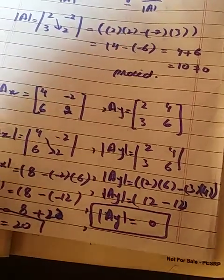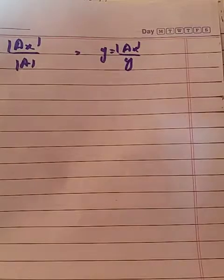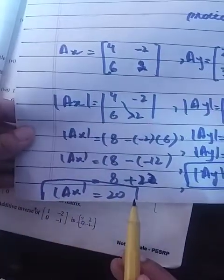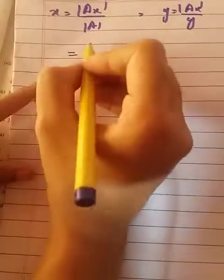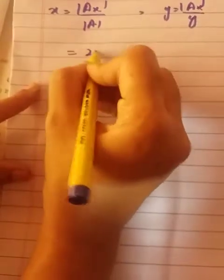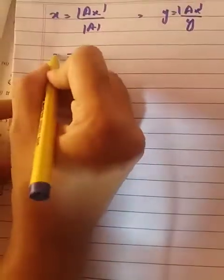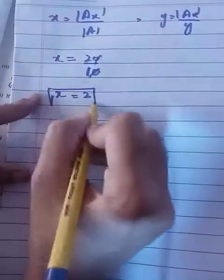Now just replace the values in our formulas. Put the value of |Ax| mod - the value is 20 - and |A| mod is 10. Replace: |Ax| mod value is 20 and |A| mod value is 10. These cancel out to equal 2. This is your answer.